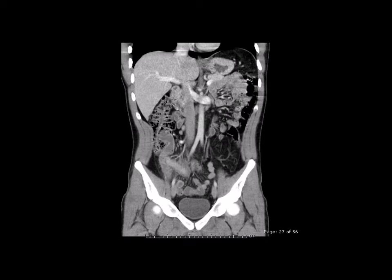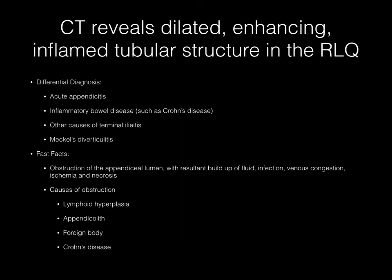Now pause your media player. This coronal CT image reveals a dilated, enhancing, inflamed tubular structure in the right lower quadrant. The differential diagnosis should include acute appendicitis, but also inflammatory bowel disease such as Crohn's disease, or other causes of terminal iliitis. Meckel's diverticulitis could also be added to the differential diagnosis here.